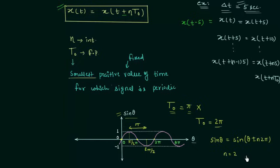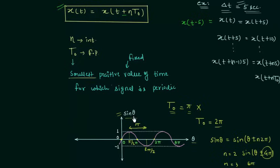When n = 2, we have sin(θ ± 4π), so sin θ is also periodic for period 4π. When n = 3 the signal is periodic for period 6π as well. These are simply periods for which the signal is periodic, but they are not the fundamental period because they are not the smallest. The smallest is 2π, therefore 2π is the fundamental period.